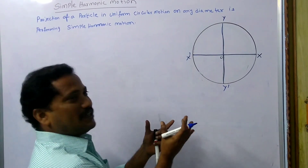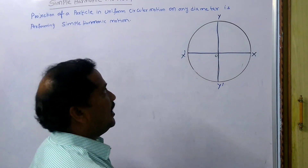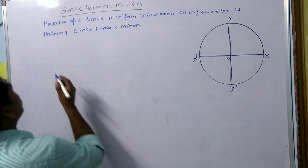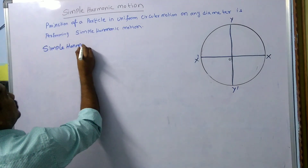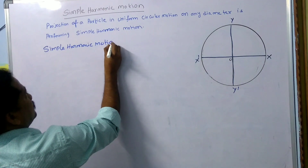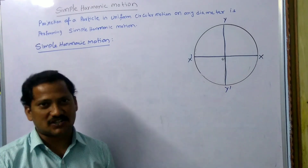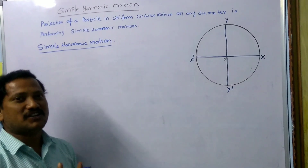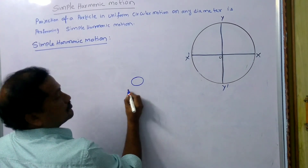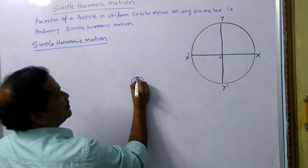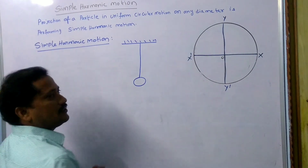You can compare this with a simple pendulum. As we know, how can you define simple harmonic motion? Already in our previous class I discussed simple harmonic motion and the time period derivation. Here, I would like to tell the definition of simple harmonic motion. Let us consider a metal bob whose mass is m, freely suspended to a rigid support using a torsionless thread.